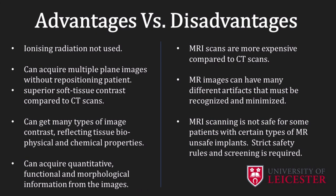In this final slide, I'm going to summarize some of the advantages and disadvantages of MRI. The main advantages include the fact that it uses non-ionizing radiation, we can acquire multiple plane images without repositioning the patient, we can get superior soft tissue contrast compared to CT scans, there are many types of image contrast reflecting tissue biophysical and chemical properties, and we can acquire both quantitative and functional and morphological information from the images. Some of the disadvantages of MRI: MRI scans are more expensive compared to CT, MRI images can have very many artifacts that must be recognized and minimized, and MRI scanning is not safe for patients with certain types of implants, with strict safety rules and screening required.